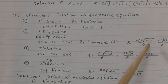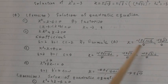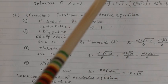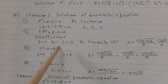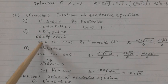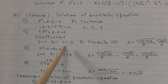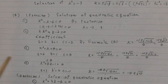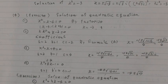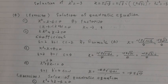Using 1 minus 4ac: 1 minus 4 times 2 times minus 2, which gives root of 1 plus 16, equals minus 1 plus or minus root of 17, over 4.